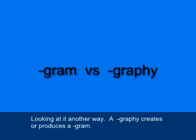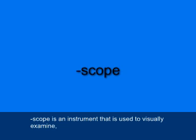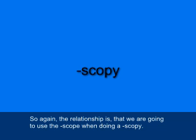A GRAPHY creates or produces a GRAM. The next pair of suffixes is SCOPE and SCOPY. SCOPE is an instrument that is used to visually examine. SCOPY is the process of examining visually. So again, the relationship is that we're going to use the scope when doing a SCOPY.